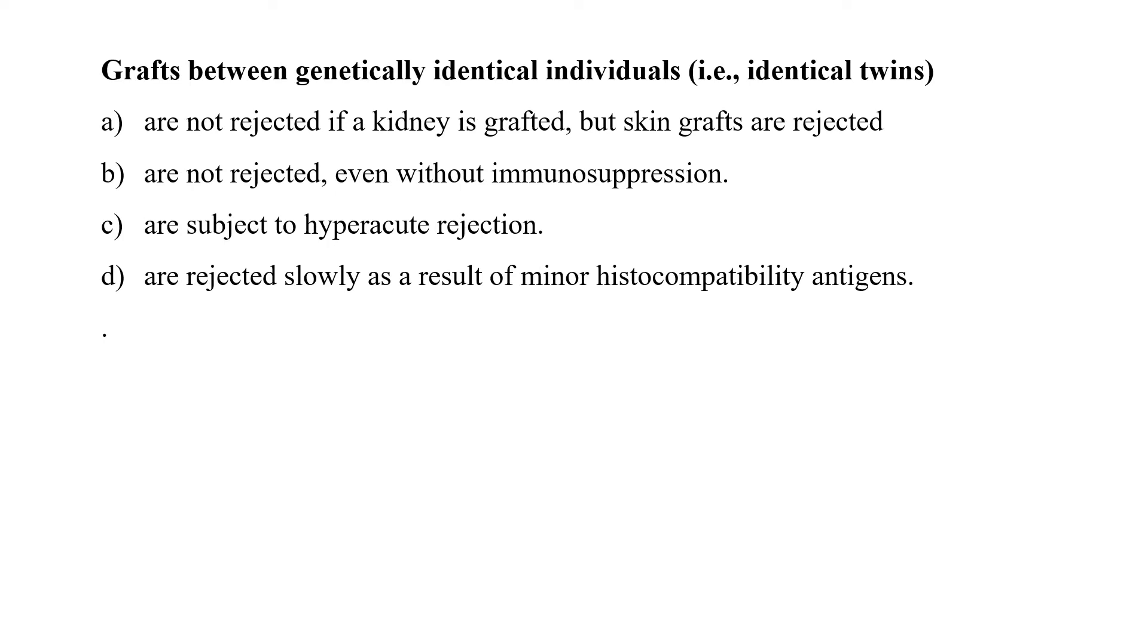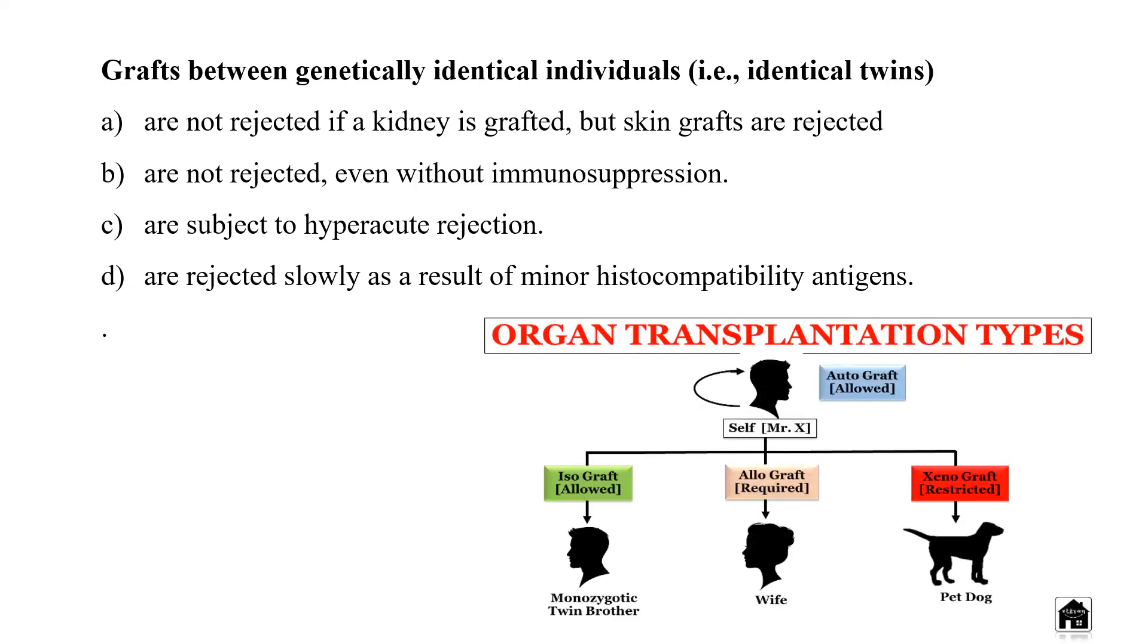Grafts between genetically identical individuals, that is identical twins, are not rejected if a kidney is grafted but skin grafts are rejected, are not rejected even without immunosuppression, are subjected to hyperacute rejection, or rejected slowly as a result of minor histocompatibility antigens. Basically, barring technical difficulties, a graft between genetically identical twins or individuals is readily accepted and are almost never rejected. Such grafts are also known as isograft. So option B is the correct answer.